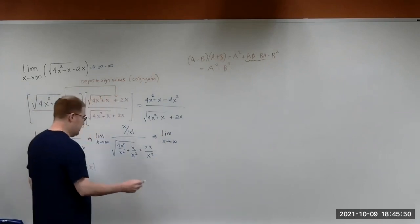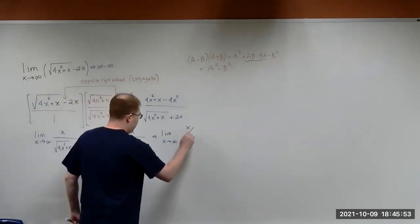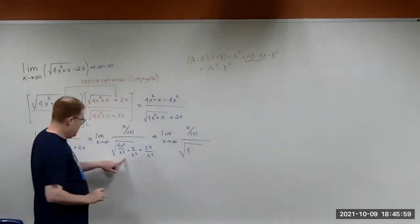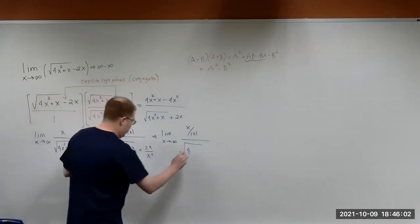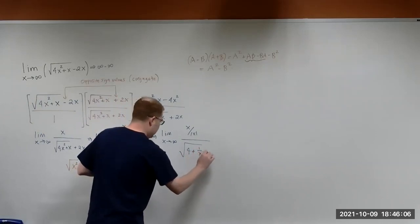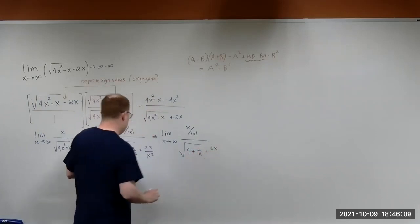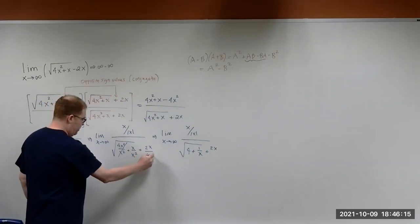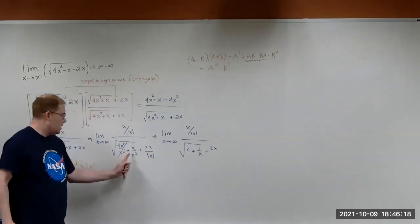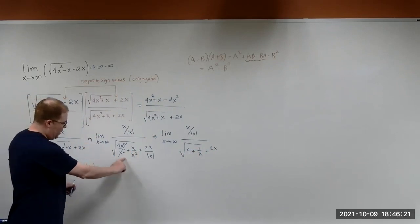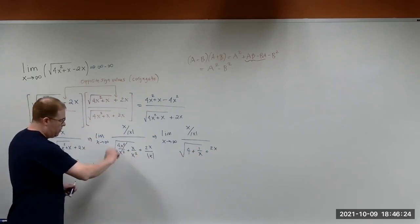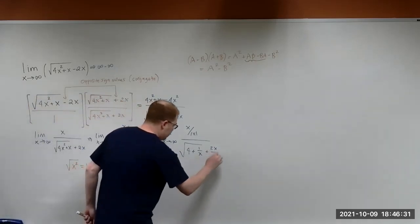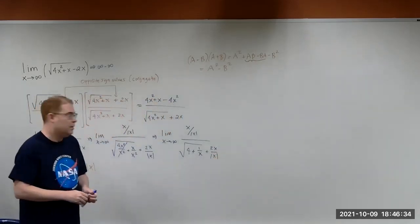Now we can simplify this. We have x divided by the absolute value of x, all divided by: the 4x squared over x squared gives us 4 since they cancel; then 1 over x from the x over x squared term; then plus 2x over x squared. Technically, I should have the absolute value of x here, because I have 1 over x squared inside the square root, so taking it out gives us 1 over the absolute value of x.